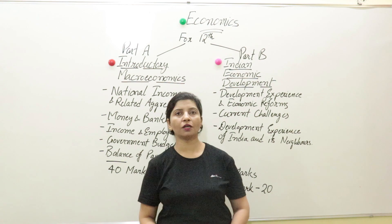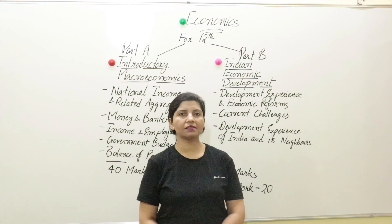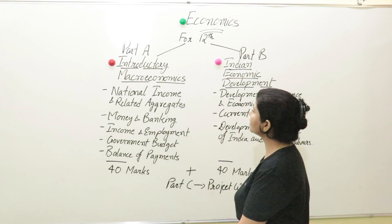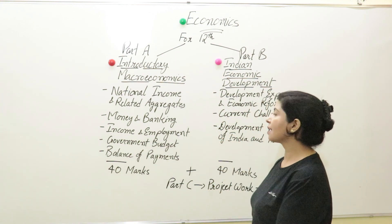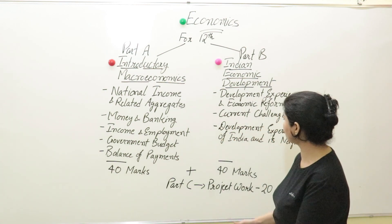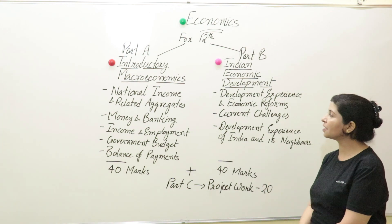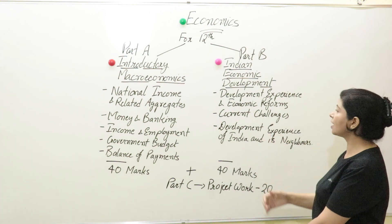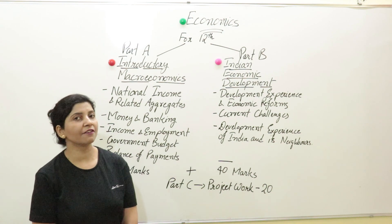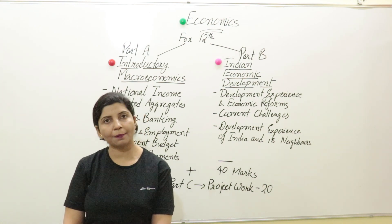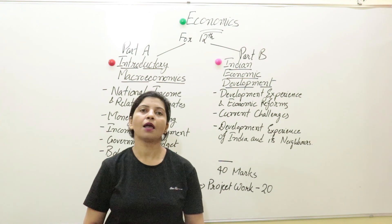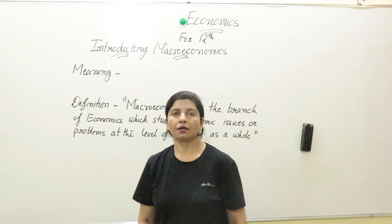Economics for 12th standard comprises three parts: Part A, Part B, and Part C. Part A is introductory macroeconomics, covering five units — national income and related aggregates, money and banking, income and employment, government budget, and balance of payments — for 40 marks. Part B also carries 40 marks and covers development experience and economic reforms, current challenges, and development experience of India and its neighbors. Part C is project work for 20 marks, totaling 100 marks.